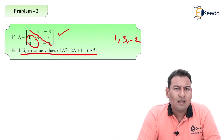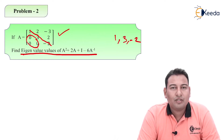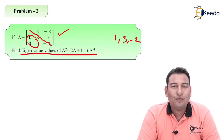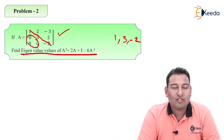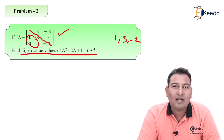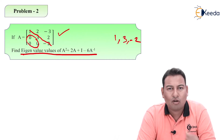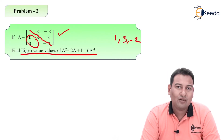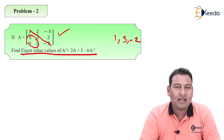You might be thinking, why didn't we use this property until now? If you observe the problems we solved earlier, we never got a case like this — upper or lower triangular matrix. But whenever you get such a question, first check whether the matrix is triangular or not. If it is not triangular, go ahead with the normal procedure; if it is triangular, directly write down the eigenvalues.